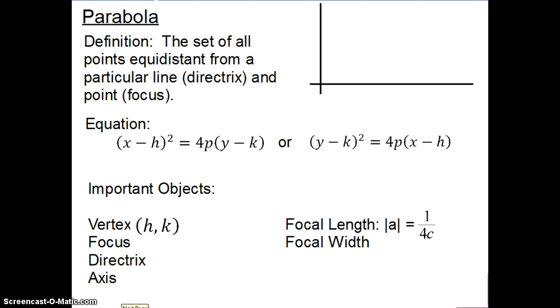Today we're going to talk about our last type of conic section called the parabola. Here is our technical definition: the set of all points equidistant from a particular line, which we call the directrix, and a point called a focus.